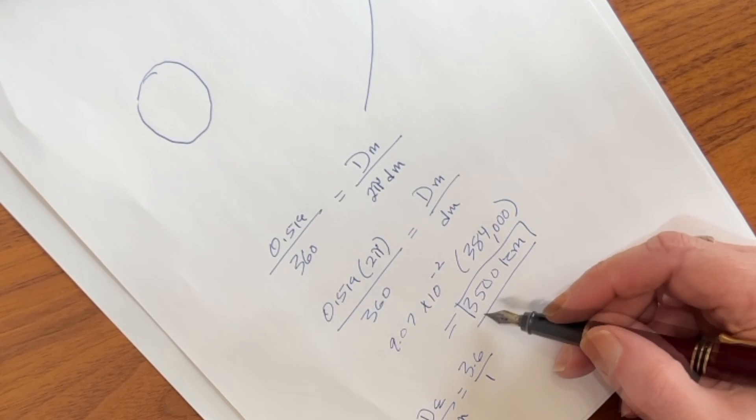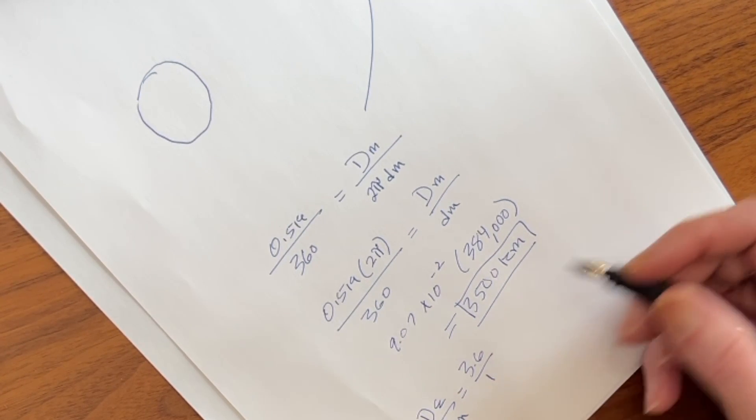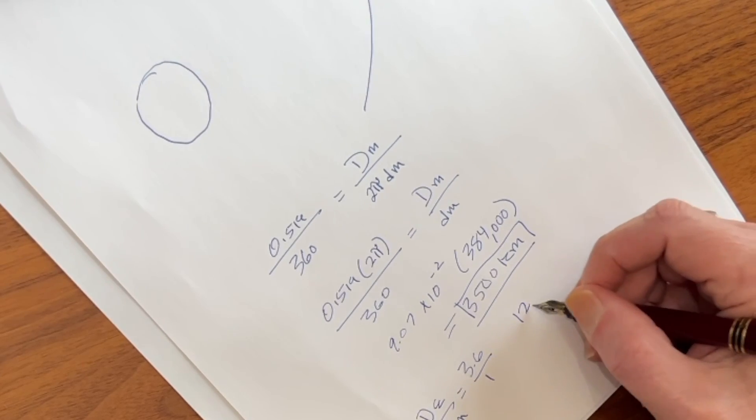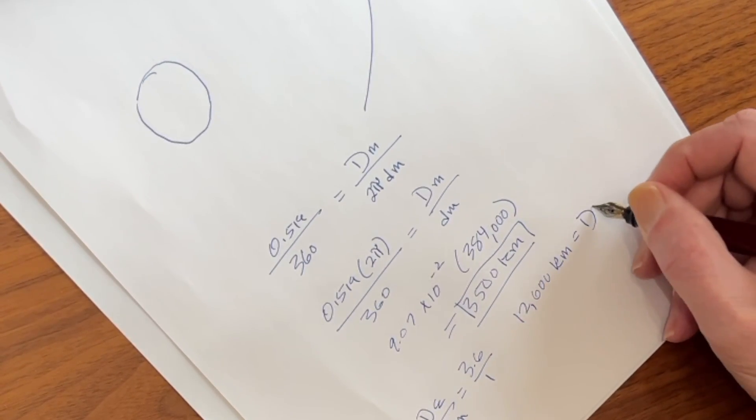So now we can just calculate this directly. We take 3,500, we multiply it by 3.6, and what do we get? 12,600 kilometers equals the diameter of earth.